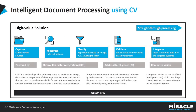Let's see how document processing is done using CV in an intelligent way. There are five stages: capture, recognize, classify, validate, and integrate. In the capture stage, we input the data sources to extract the data we need. In the recognize stage, we identify the fields to be extracted. In the classify stage, we classify the documents based on image, PDF, or format. In the validate stage, recognized data is extracted based on anchor validations. Finally, in the integrate stage, the extracted data is sent to the target systems. All stages are performed using Computer Vision.